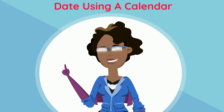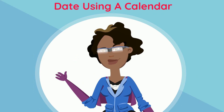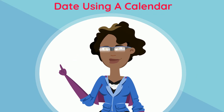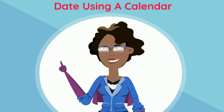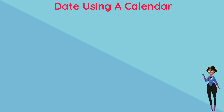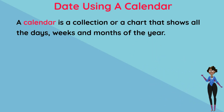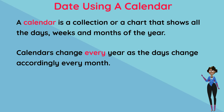Now that we all have an idea of how to read dates, let's discuss calendars and their uses. A calendar is a collection or chart that shows all the days, weeks, and months of a year. Calendars change every year as the days change accordingly every month.